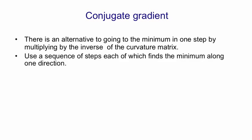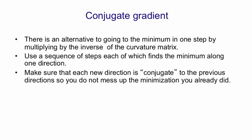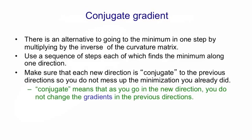Once it's done that, it now finds another direction and goes to the minimum in that second direction. The clever thing about the technique is it chooses its second direction in such a way that it doesn't mess up the minimization it already did in the first direction. That's called a conjugate direction. Conjugate means that as you go in the new direction, you don't change the gradients in the previous directions.